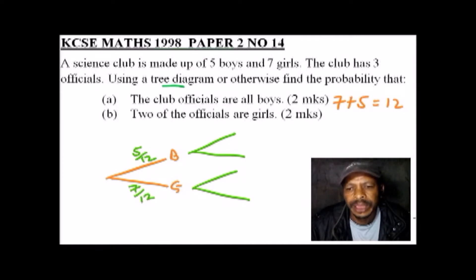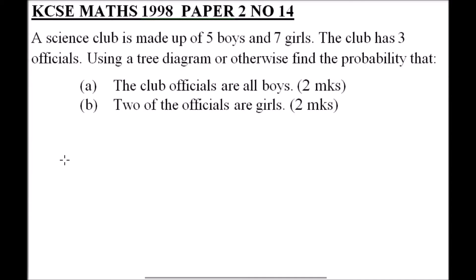To answer this question, we start by drawing our tree diagram. For the first selection, a boy may be selected or a girl may be selected. The probability that a boy is selected: there were five boys, so we have 5 out of 12. The number of girls was seven, so it is 7 out of 12.